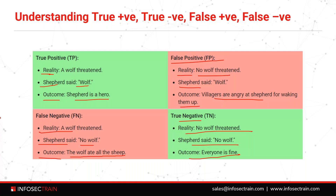So to summarize: true positive simply means there was a wolf in the village, Shefford spotted it and said there is a wolf. The outcome is Shefford notified everyone in the village, everyone saved their sheep — they scared away the wolf and threw it out of the village. They took the appropriate steps. True positive — clear.